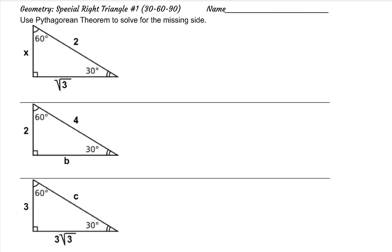Today we're going to talk about one of two very special right triangles. This particular one has a 90 degree angle, of course, because it's a right triangle, a 30 degree angle, and a 60 degree angle.